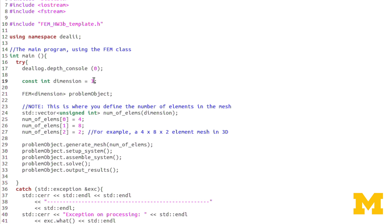You can see we've changed dimension to equal 3, as you'd expect. Now, the vector defining the mesh size, so the number of elements in each direction, we added on a third dimension. So in the z direction, you can specify the number of elements. Here, for this example, it's a 4 by 8 by 2 element mesh in 3D.